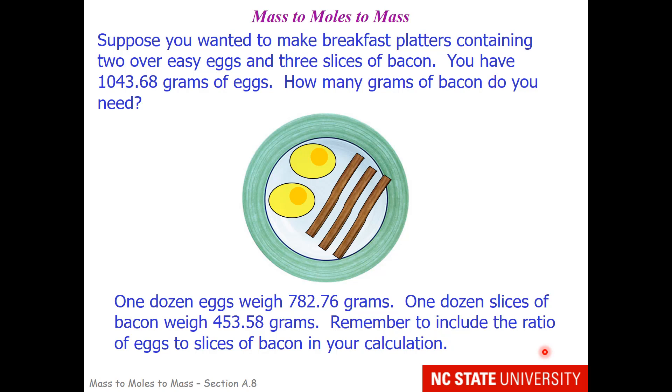If you are working at a restaurant, your breakfast platter might have two eggs and three slices of bacon. That is what each customer orders, and that's what each customer expects. Now let's suppose you work in a kind of unusual restaurant in that the ingredients are weighed. I know that in real life you would just count the eggs. But if the eggs and the bacon were so tiny that you couldn't see them, or if you were trying to do this strictly by mass, you would have to work with this like you do with chemicals and think about the mass of materials. So this question tells you you have 1,043.68 grams of eggs. How many grams of bacon do you need? And then you're given some information.